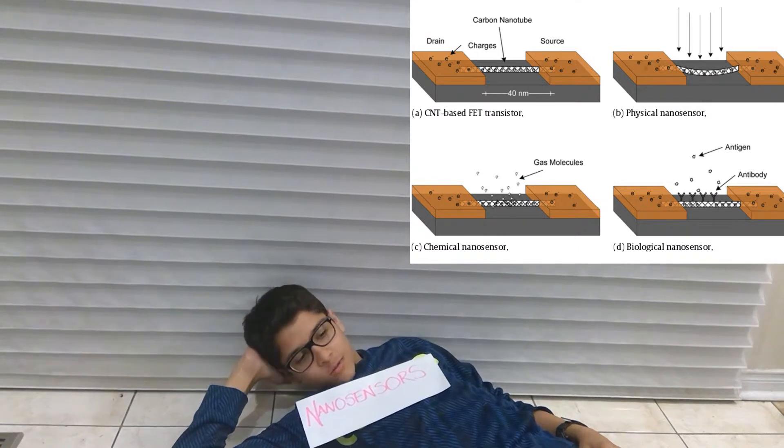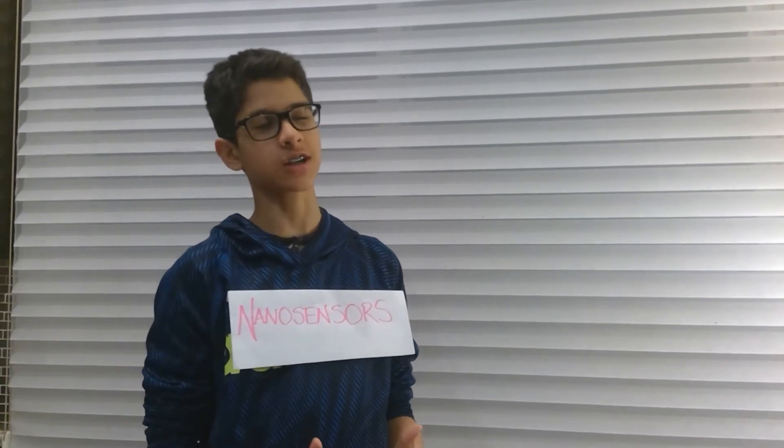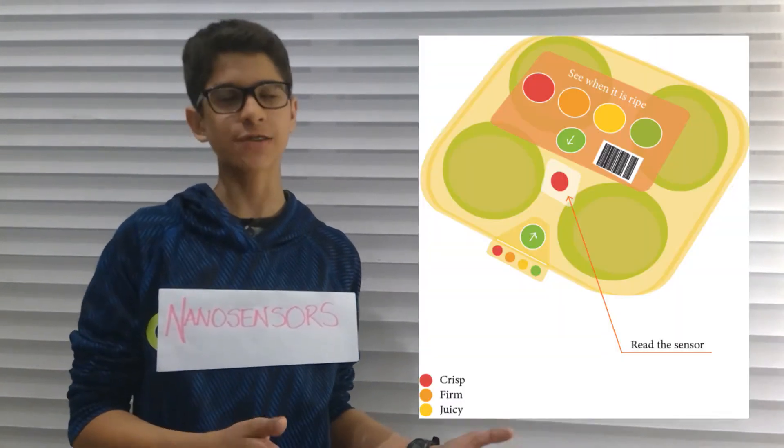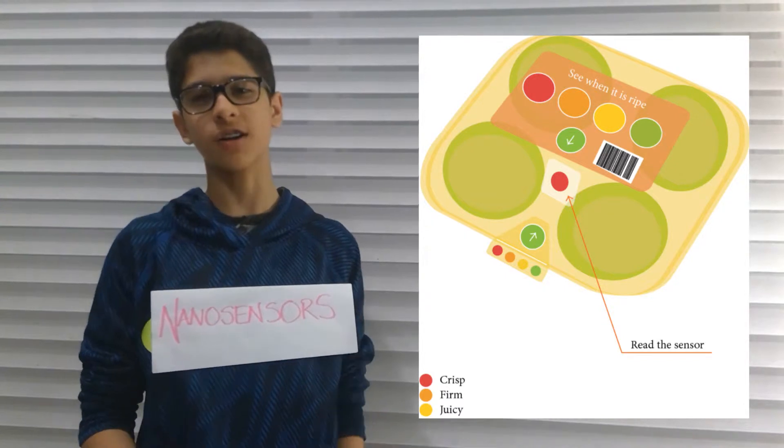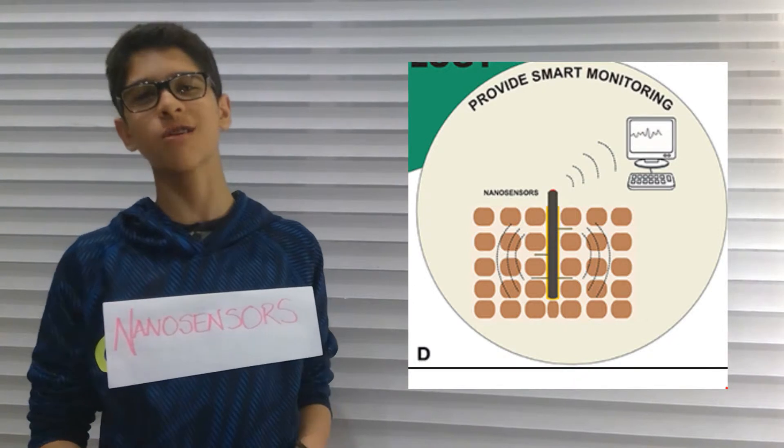Nanosensors are able to sense the future, transmitting data and mainly working with the change of electricity. We can help industries such as food, ensuring that food one bought is not actually rotten. We can even help industries such as agriculture, ensuring that crops are growing the right way, and lastly healthcare with diabetes patients and even cancer patients.